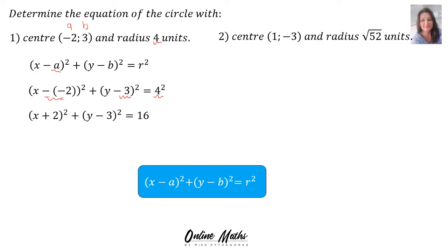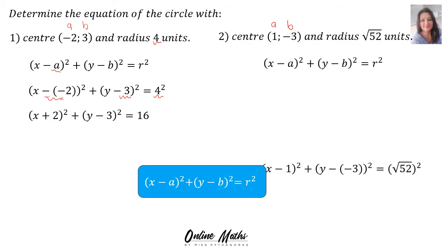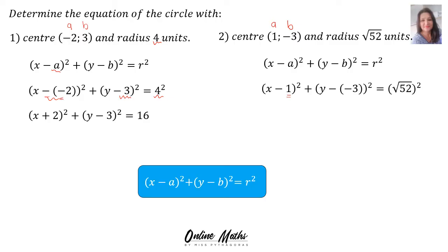Example 2: Determine the equation of the circle with center (1, -3) and radius √52 units. A's value is 1 and b's value is negative 3 — a and b go with the center's coordinates. Into our formula, in a's place we substitute 1, in b's place we substitute negative 3, and r is √52. Then x minus 1 squared stays, and a minus times a minus is a plus, so it becomes y plus 3 squared equals 52, since squaring a square root leaves only 52. That's the equation of the circle.